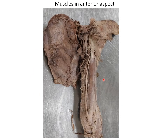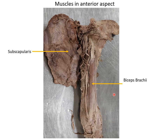On the anterior aspect of the scapular and arm region, we can see the subscapularis muscle. The biceps brachii muscle is visible with its long head. The coracobrachialis muscle comes from the tip of the coracoid process. You should be able to know their function and nerve supply.